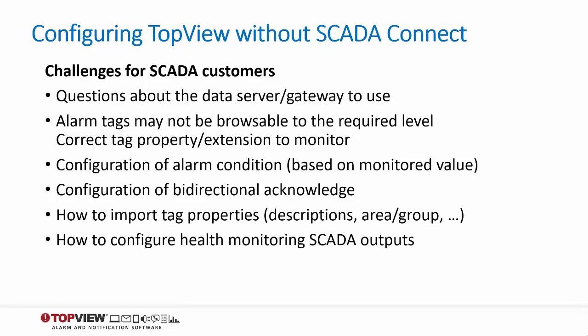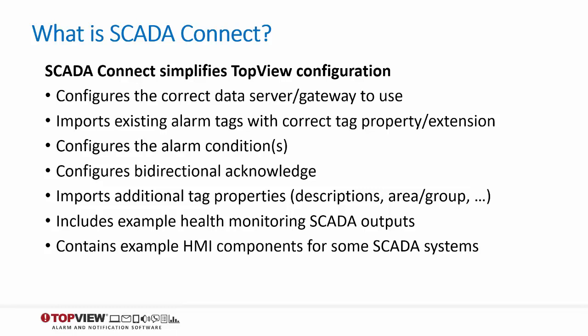Before SCADA Connect, some Top View integrators created tools to convert SCADA alarm configurations to Top View configurations. While these tools were beneficial to their customers, they were not available to all Top View customers. We created SCADA Connect as the tool that all customers could use. SCADA Connect simplifies Top View configuration for SCADA users. It assists with the configuration of the gateway, imports existing alarm tags with correct names, configures the alarm conditions and acknowledged tags, imports additional tag properties and alarm messages, and includes example health monitoring outputs. For some SCADAs, it also includes example HMI components and scripts for Top View health monitoring and application access.